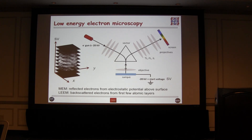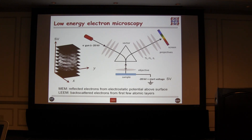Therefore, the electrons arrive at the sample surface and interact with the surface potential at an extremely low energy of the order of an electron volt, and therefore they are very sensitive to any modulation in the surface potential. The electrons are reflected or backscattered, then they go through the sector field, deviated in the opposite direction, through a projection lens, and we get the image on the screen.